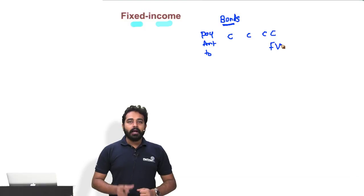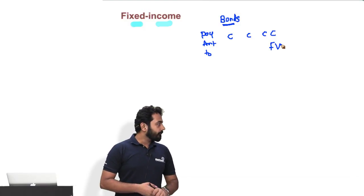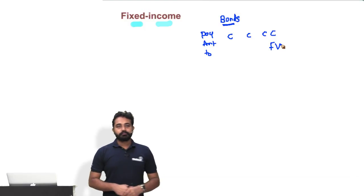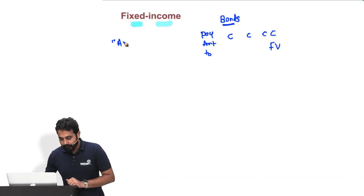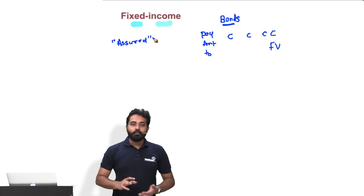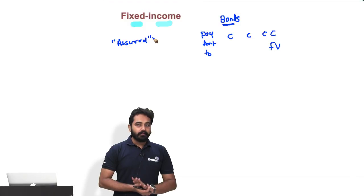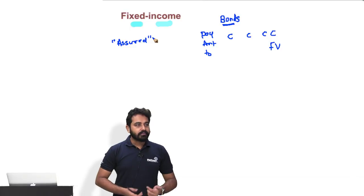Why do we use the word fixed income? Are our incomes fixed in this instrument, or variable, or assured? So which means if I buy a bond, no matter what I am going to get that amount of payment which is promised to me? Even if the company doesn't make profits, I will still get the payments? Even if company defaults, I will still get the payment?